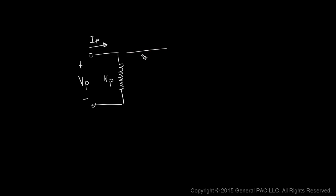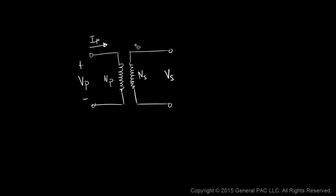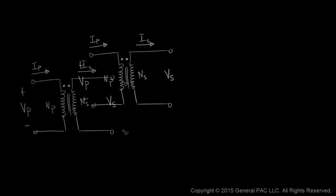The secondary winding has the number of secondary turns defined as Ns, the secondary voltage across the secondary winding, and secondary current flowing out. Often we have polarity markings indicated by round dots, and two lines in the middle of the two windings indicating magnetic coupling.